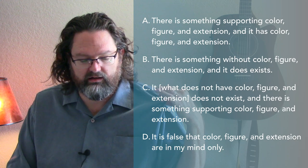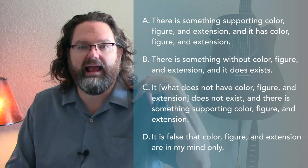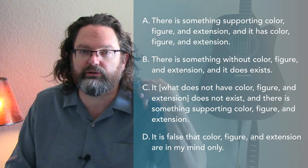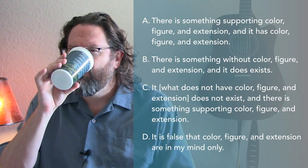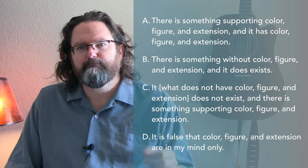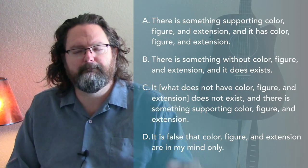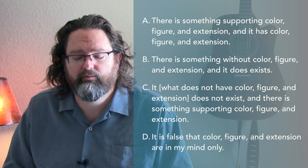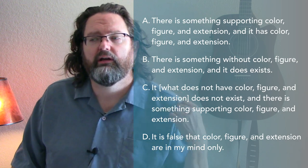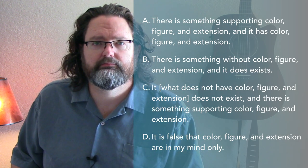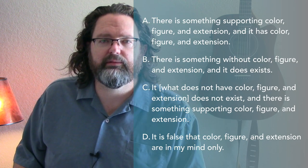So my shirt here caused this color, figure, and extension, and it has it. So my shirt causes blue, and it has blue — there's blue in there. So if we were to look at my shirt, we'd find these fibers, and we go closer and closer and closer. We keep looking on down, then we find the atomic structure of the shirt. Is blue in there? If you think blue is also in the shirt, I'm going to ask for its chemical composition. What is the chemical composition of blue? Because it's not in the periodic table of elements.